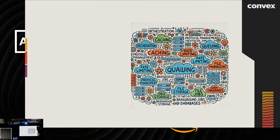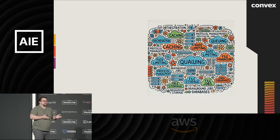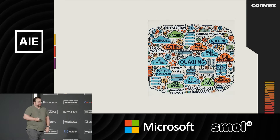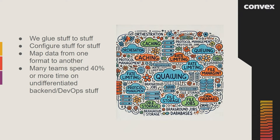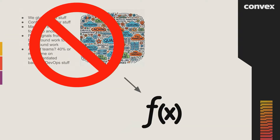Convex's true mission is to replace traditional backend engineering — all the stuff we do on the backend. We glue things to things, configure stuff for different systems, map data formats constantly. A lot of times teams are spending half their time on this stuff that has nothing to do with your product — your users don't care and don't benefit. So we want to replace all this with a high-level API, a functional interface that feels native to your application, similar to Firebase or Parse before it.